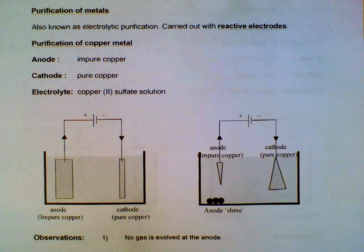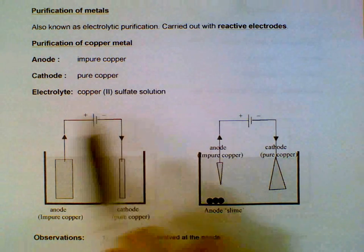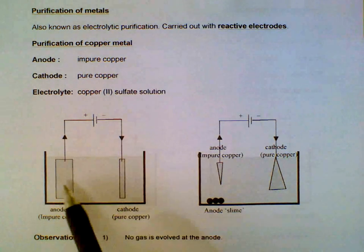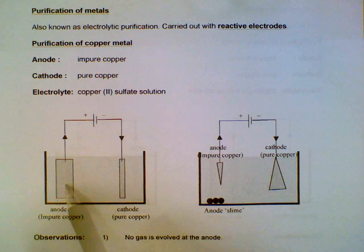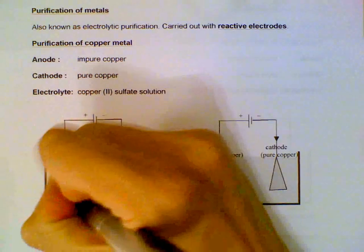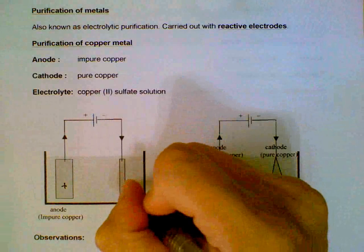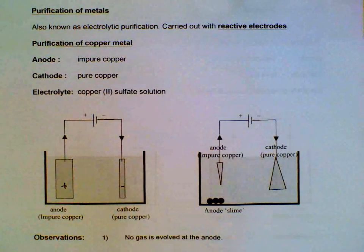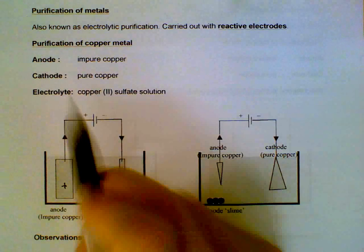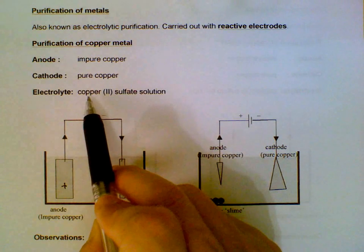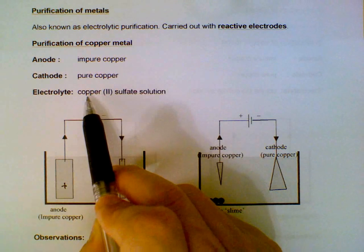So first application is purification of copper metal. In this setup at the anode we have the impure copper, at the cathode we have the pure copper. And if we want to purify copper we must make sure that the electrolyte contains copper ions. In this case we use copper(II) sulfate solution.